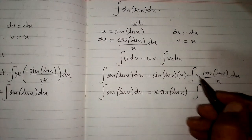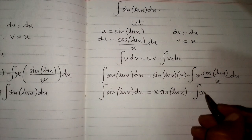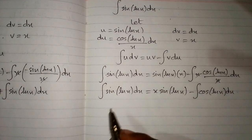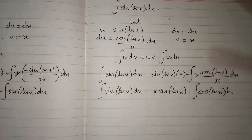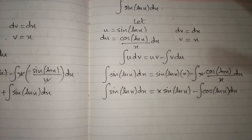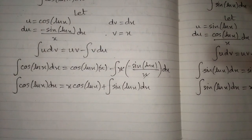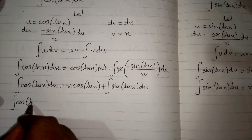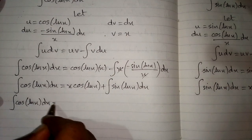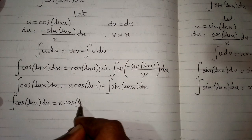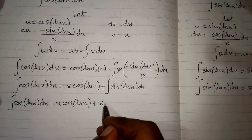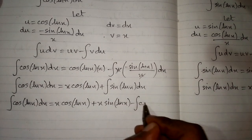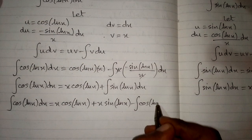The integral of sine of ln of x dx equals x times sine of ln of x minus integral of cosine of ln of x dx, since the x's cancel. Now we substitute this result back into the previous integral, giving: integral of cosine of ln of x dx equals x times cosine of ln of x plus x times sine of ln of x minus integral of cosine of ln of x dx.